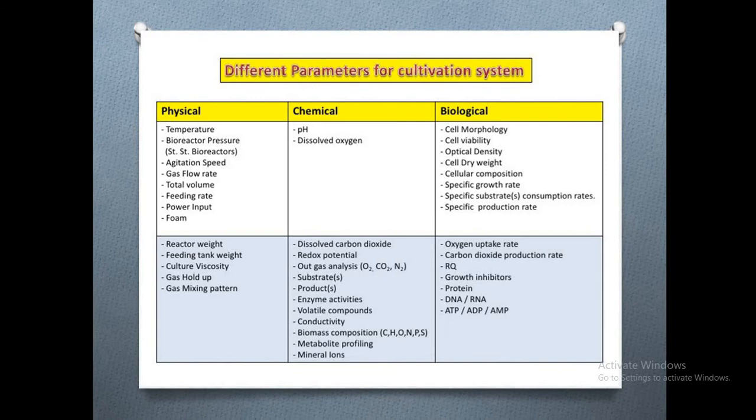The biological conditions to be monitored include cell morphology, cell viability, optical density, dry biomass weight, cellular composition, specific growth rate, specific substrate consumption rate, and product-specific production rate. Additionally, oxygen uptake rate, carbon dioxide production rate, and RQ — respiratory quotient — must be tracked, along with growth inhibitors, protein content, DNA and RNA conditions, and ATP, ADP, and AMP levels.